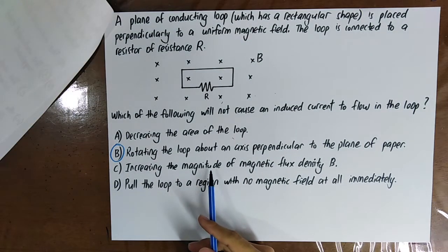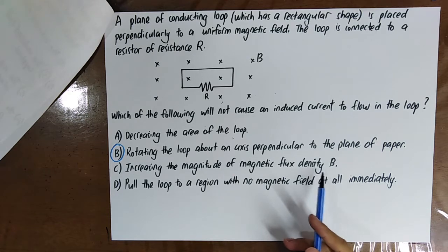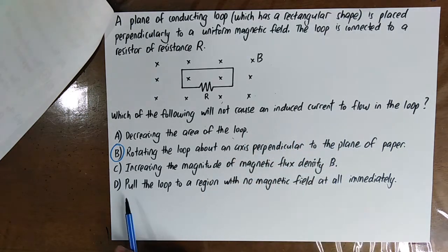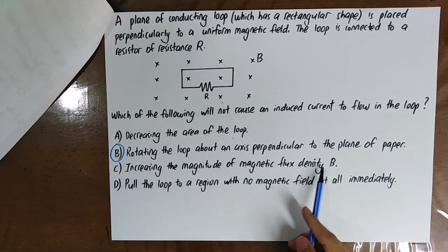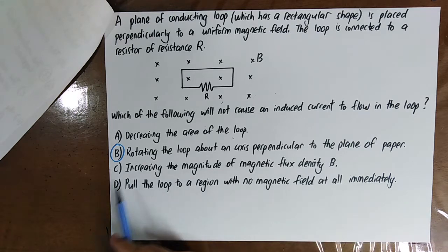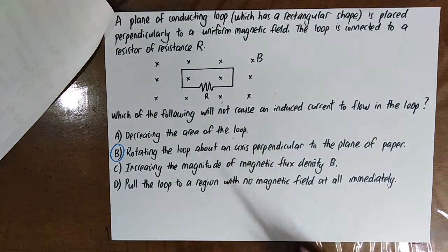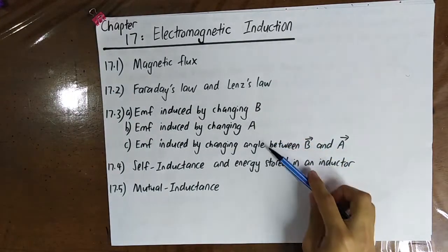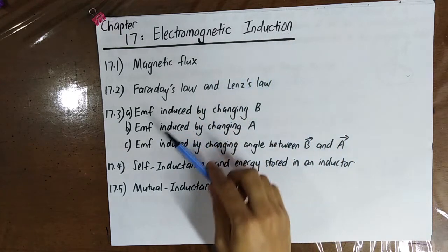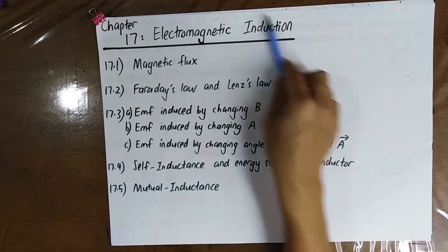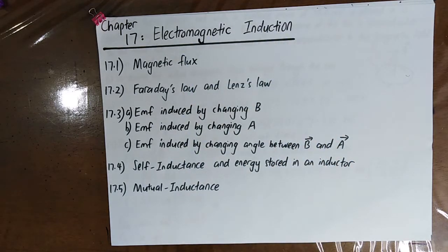Increasing or decreasing the magnitude of the magnetic flux density B can generate an induced current. Pulling the loop to a region with no magnetic field is equivalent to decreasing B to zero, which also generates an induced current. So there are three different methods to induce an EMF — this is electromagnetic induction. In the next video, we will talk about self-inductance and the energy stored inside an inductor.